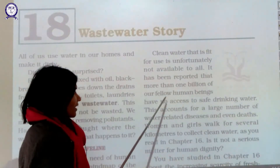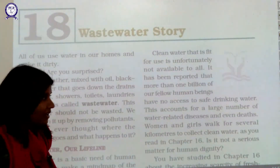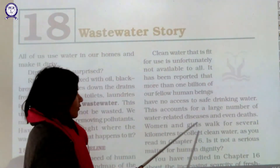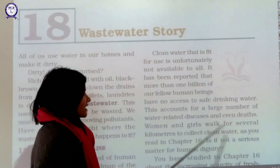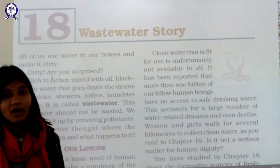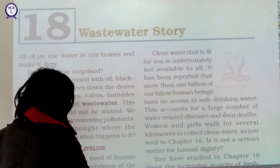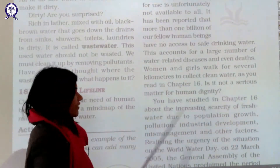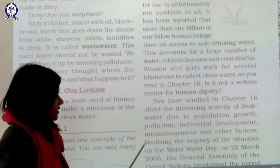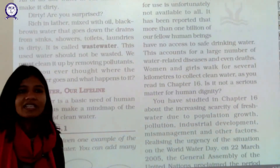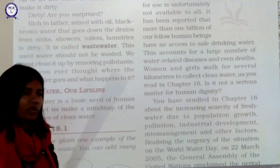It has been reported that more than 1 billion of our fellow human beings have no access to safe drinking water. This accounts for a large number of water-related diseases such as diarrhea and cholera, and even deaths in many parts of Africa and India. Women and girls walk several kilometers to collect clean water, so they are not able to get an education. Population growth is one of the major factors for water-related problems, along with industrial development and mismanagement.